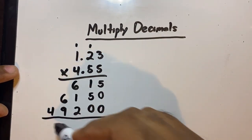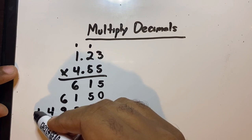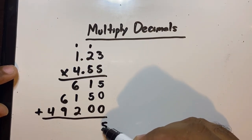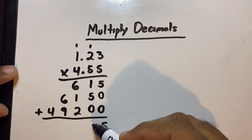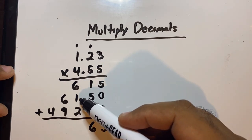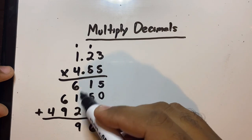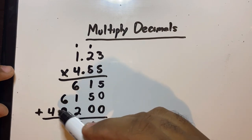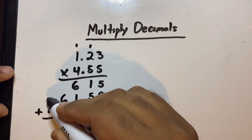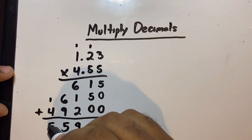When we get to adding this part, five plus nothing is five. One plus five is six. Six plus one plus two is nine. Six plus nine is 15 — carry the one. And then one plus four is five.